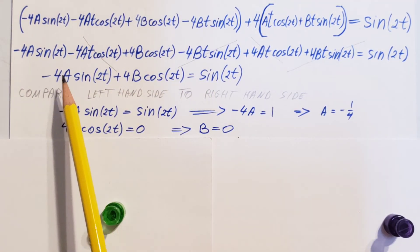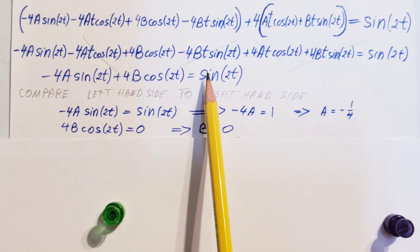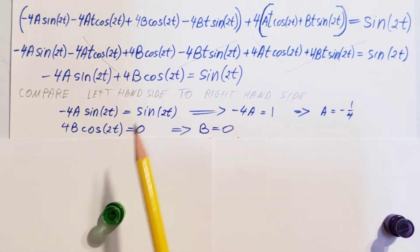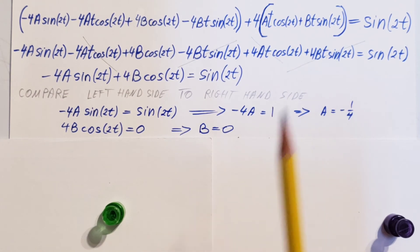So, let's write it down. Negative 4a sine 2t equal 1 times sine 2t. Sine 2t cancels. All we have left. Negative 4a equals 1. And our a is negative 1 fourth.